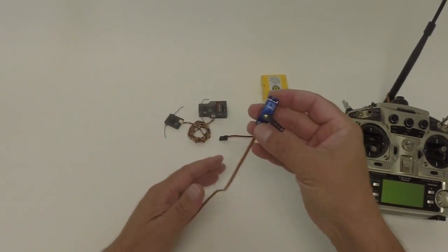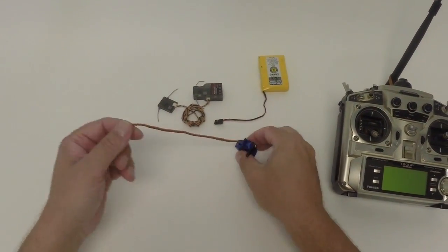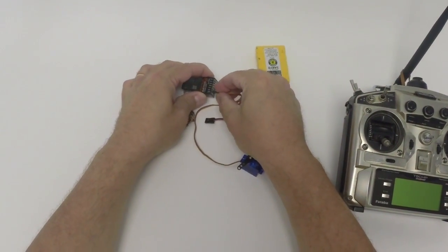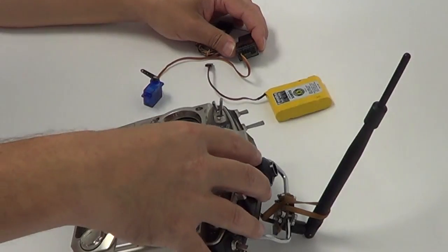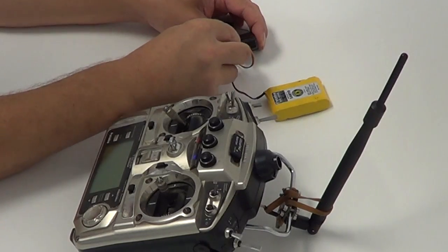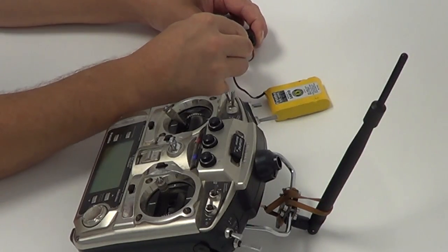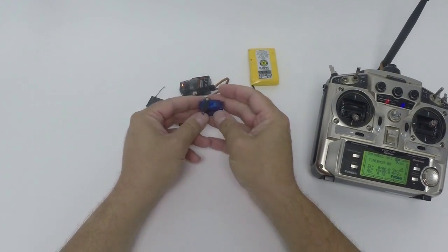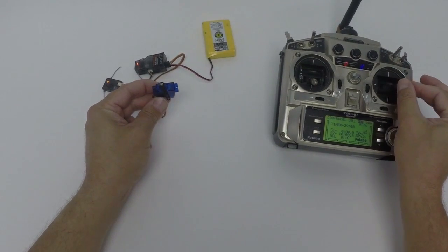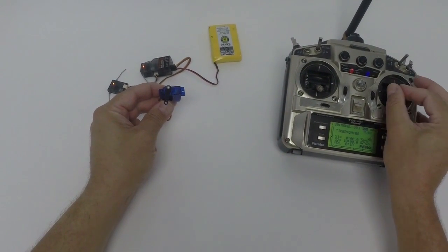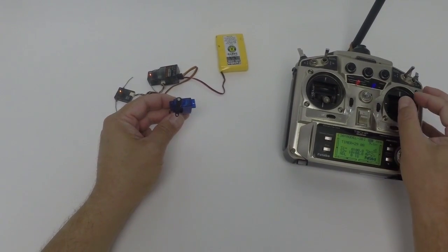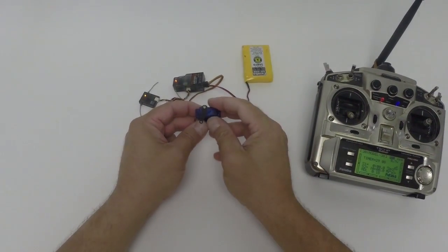For this step we will take a standard hobby servo, we will plug it into the aileron channel on your receiver, we will turn on our remote control transmitter and supply power to the receiver, at which point our servo is supposed to initialize. Now if we move the aileron channel, that shows that our Satellite Receiver together with the AR7000 is properly bound to the radio.